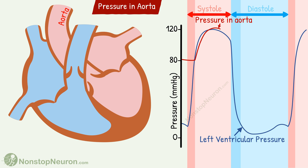This forward moving blood does not allow the valves to close for a while. Eventually, the ejection gets slower and blood flow also gets slower. So pressure in the ventricle as well as the aorta starts falling. Now due to higher pressure in the aorta, the blood flow actually reverses direction late in the ejection phase, meaning it flows from the aorta to the ventricles. This immediately causes the closure of the aortic valve.